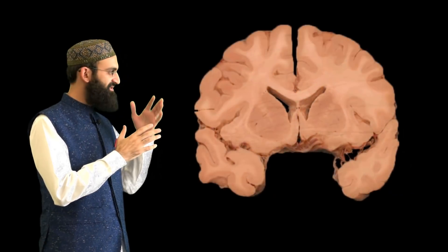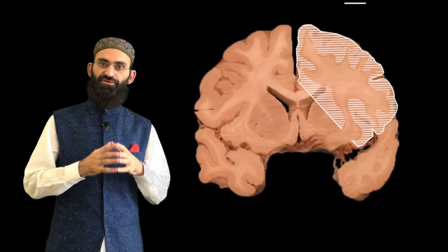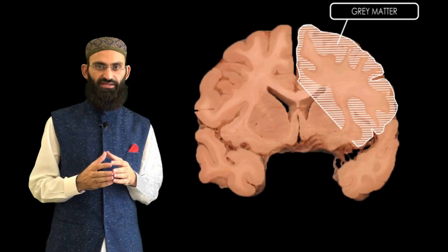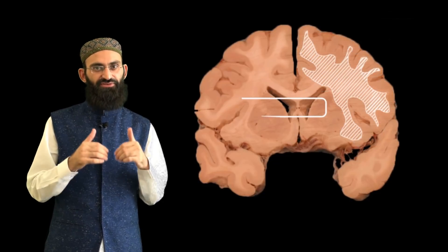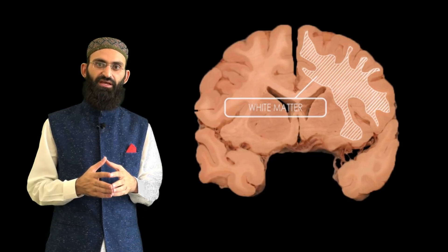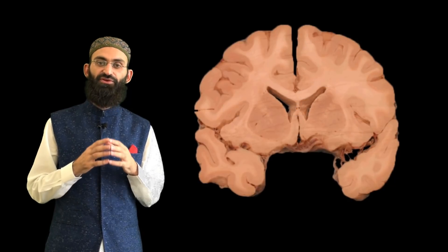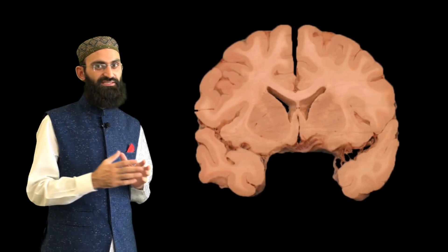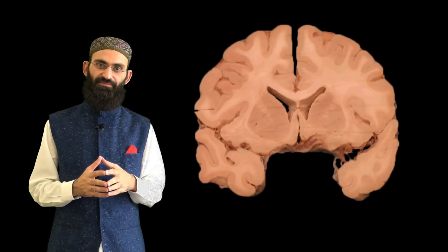In the cross-section of the cerebral hemispheres, you will notice a darker outer layer called gray matter and an inner lighter area called white matter. Gray matter primarily consists of neuronal cell bodies, while white matter is made up of myelinated axons of these neurons.